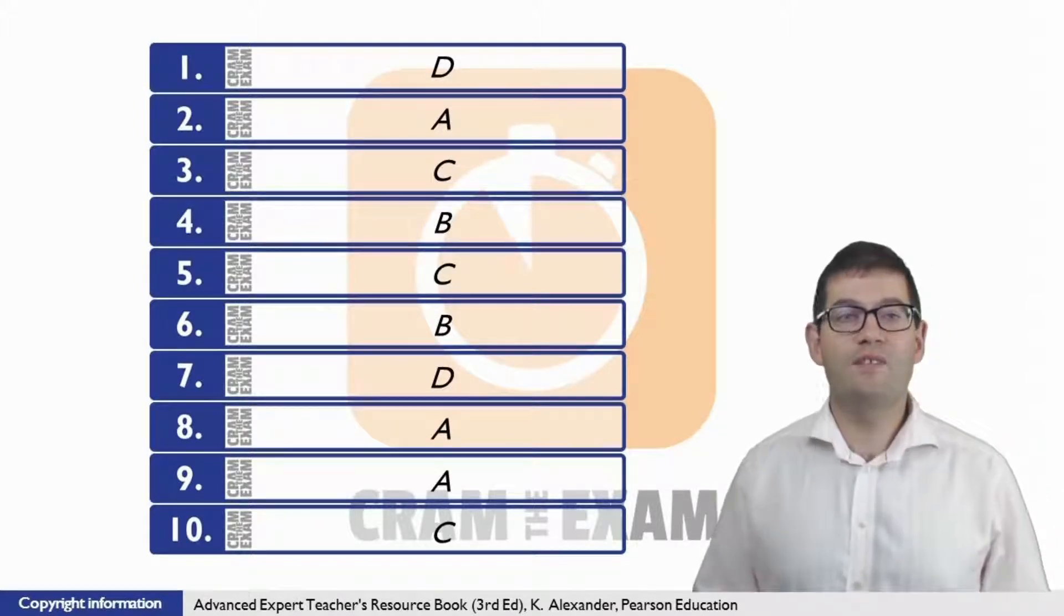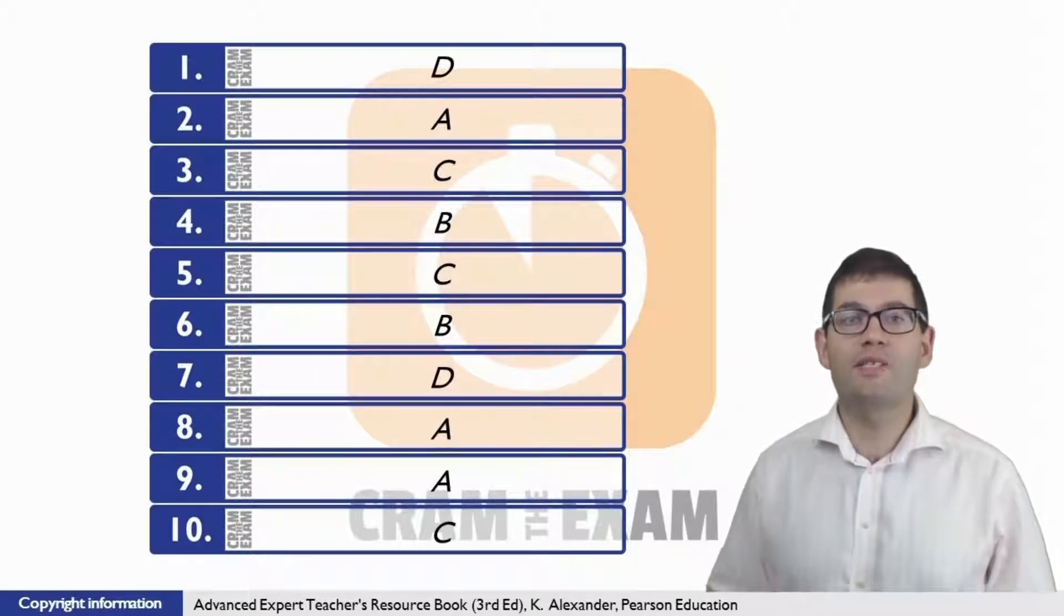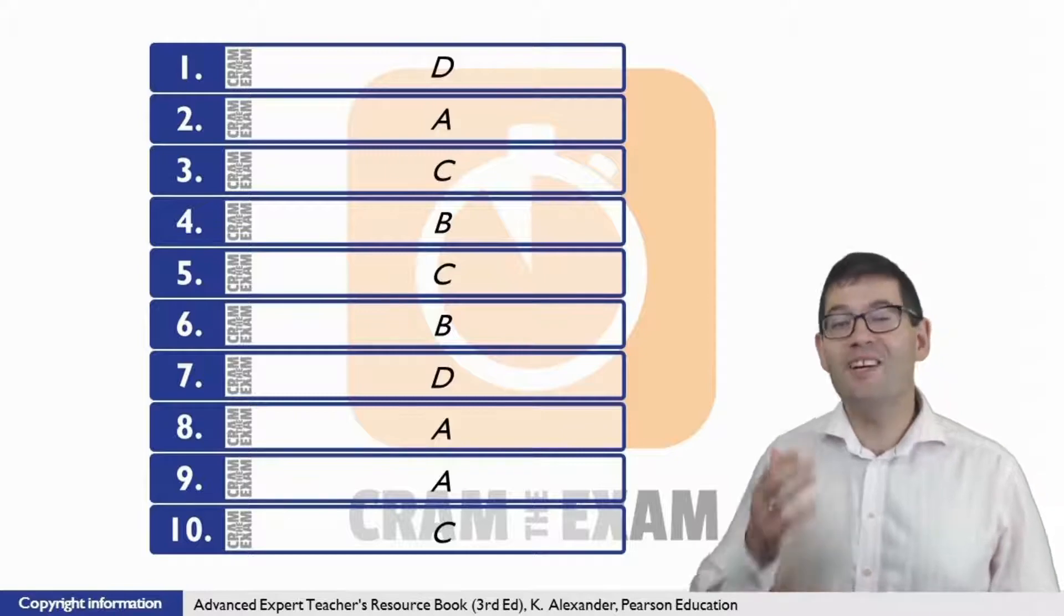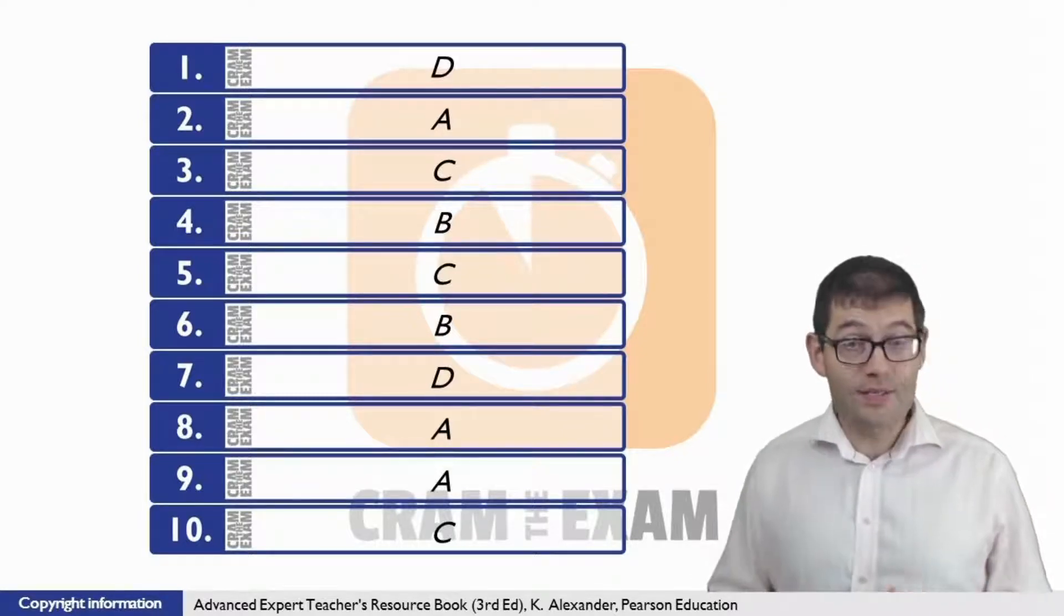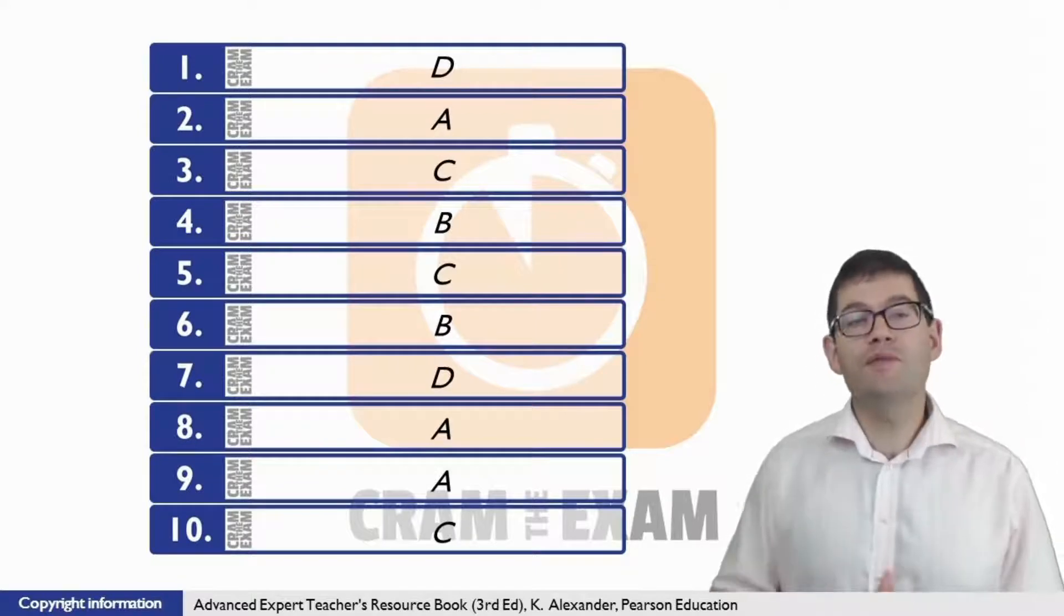For question 5, the answer is C. Chris and Joanna try to run their own business according to the principles it promotes. This idea directly links to, we like to think we practice what we preach, which we can find in C.